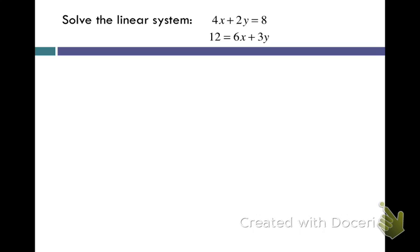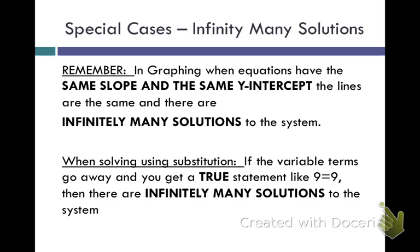Now when we were graphing, we had a case that if we had two equations that when we rewrote them in slope intercept form, their slopes and their y-intercepts were both the same, not just the slope but the slope and the y-intercept were the same, then those were the same line and therefore there were infinitely many solutions to that system.